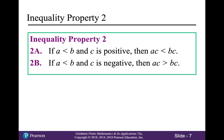Inequality property two is a little more complicated — also called the multiplication property of inequality. If A is less than B and C is a positive number, then A times C is less than B times C. You can multiply both sides of an inequality by a positive number without changing the inequality sign. However, in property two B, if A is less than B and C is negative, then A times C is greater than B times C. So if you multiply or divide both sides by a negative number, you have to reverse the inequality sign.